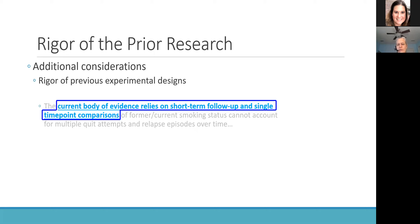They argue there's a phenotype where a person goes back and forth between smoking current and former smoker throughout lifetime, and this study design — which is relatively common — fails to capture that phenotype. If you point out a gap like this, you better be able to address it. Clearly, the investigator is laying the groundwork to say this is the gap they want to address.